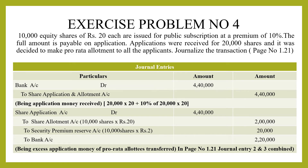The first entry: Bank Account debit to Share Application and Allotment Account — ₹4,40,000. The calculation is: 20,000 shares × ₹22 = ₹4,40,000. The 10% premium on ₹20 is ₹2, so ₹20 + ₹2 = ₹22 per share, giving a total of ₹4,40,000 received.